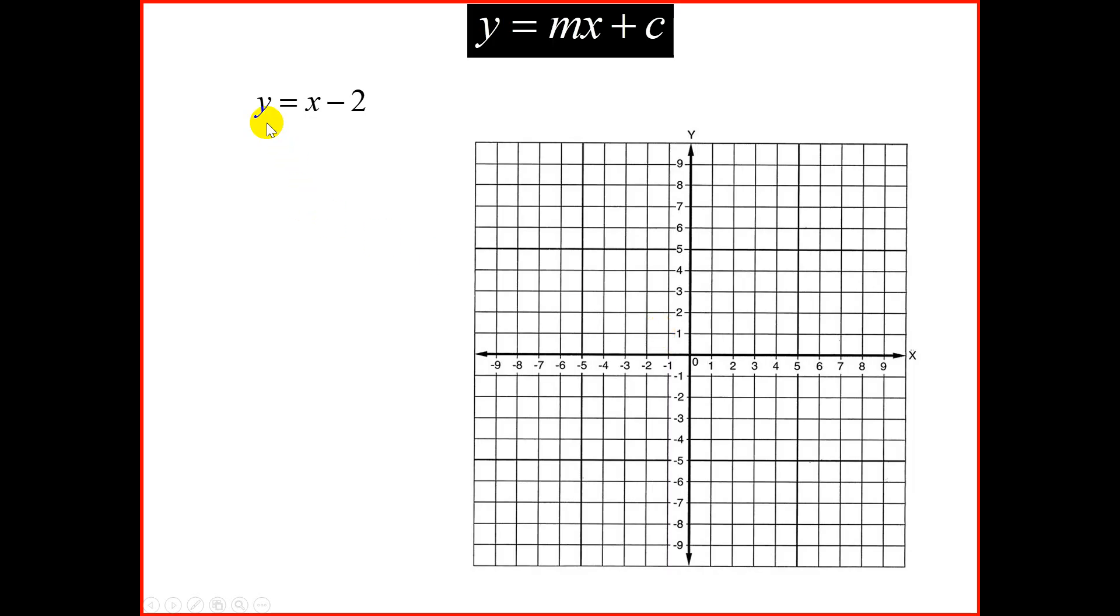In the first example, y is equal to x minus 2. To draw a straight line graph, we're going to use the dual intercept method. Firstly, we're finding the x-intercept, and we let y to be 0.